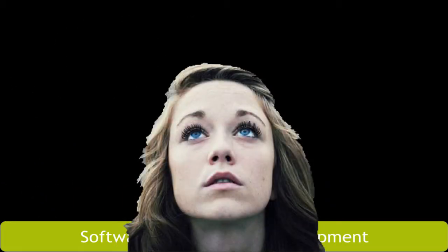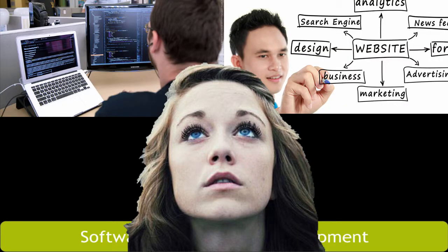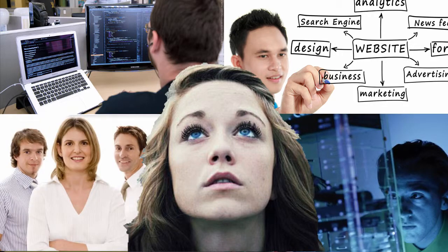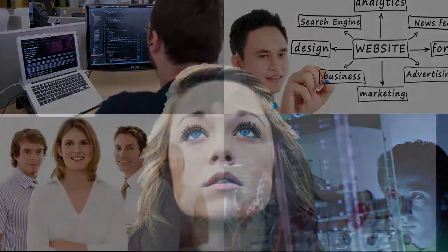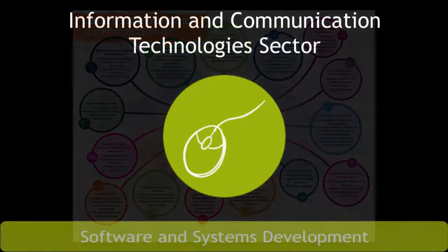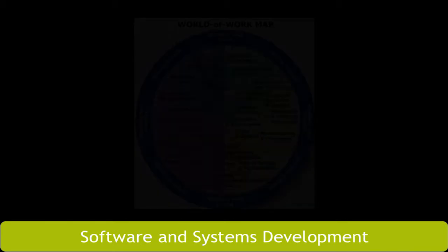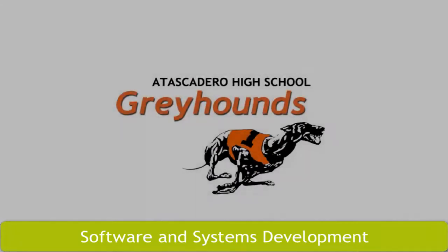So how do you start your journey to a career in software and systems development? It begins by choosing a pathway. The California Department of Education has identified 15 industry sectors and 58 career pathways based upon the type of work done. The software and systems development pathway falls under the information and communication technologies industry sector, where professionals work with data and technology.